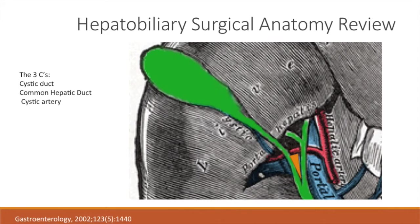I included this slide because it's very important. It turned out in rotations that I actually need to know this — it's a very common pimping question, and that's pretty much a guarantee. Whether you're scrubbing into a lap chole or actually going to surgery, this is called the Triangle of Calot. The borders of the triangle can be remembered as the three C's: the cystic duct, the common bile duct, and the cystic artery. Some professors may say that the superior border is going to be the inferior edge of the liver. However, according to the Gastroenterology Journal, the literature doesn't quite support that.